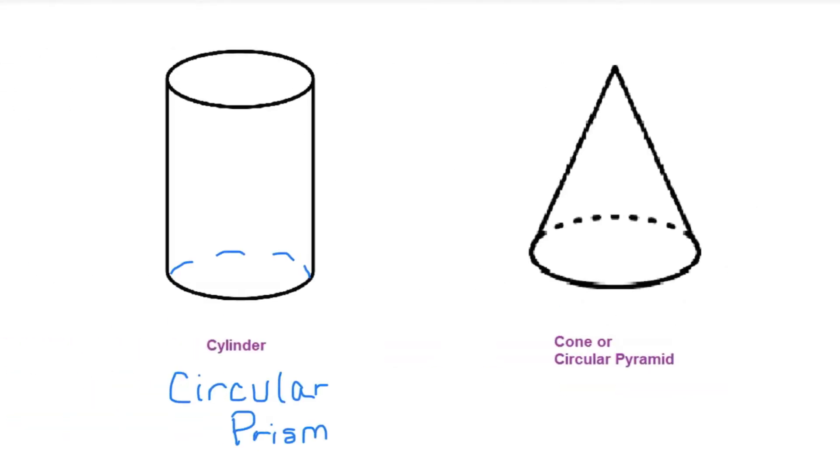So now let's take a look at the circular shape. You have two circular bases here. One here and here. So when you have two congruent shapes, that is considered a prism.